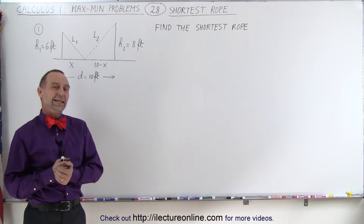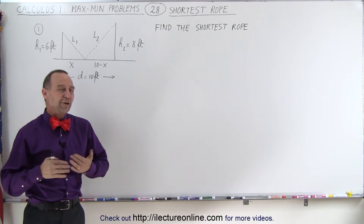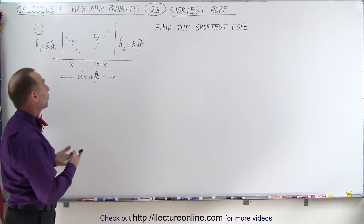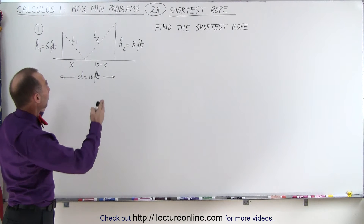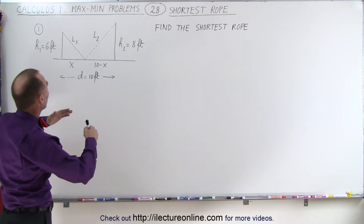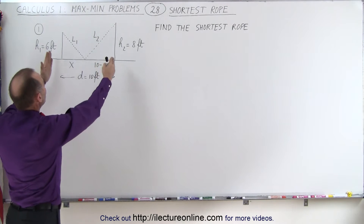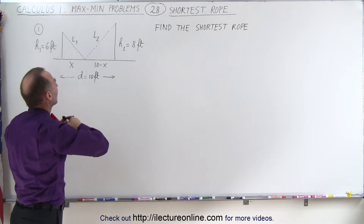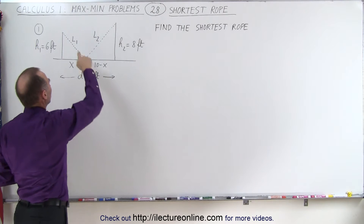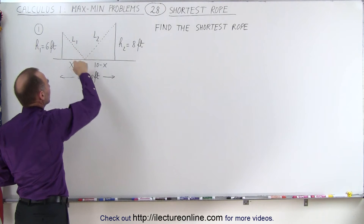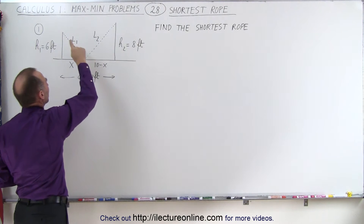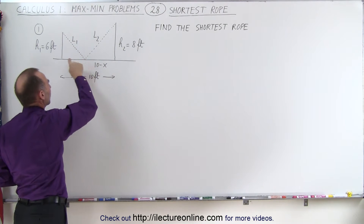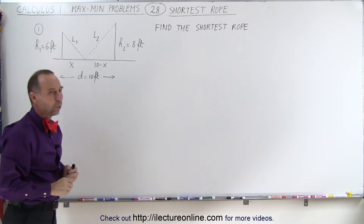Welcome to ElectronLine. A very typical type of problem you may run into is something like this where you have two posts of unequal height. You try to put a string between the two posts, but the string must touch the ground somewhere between the two posts.